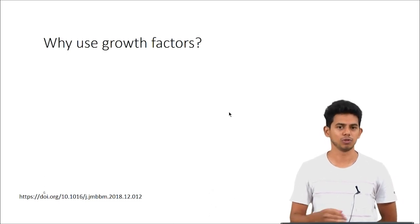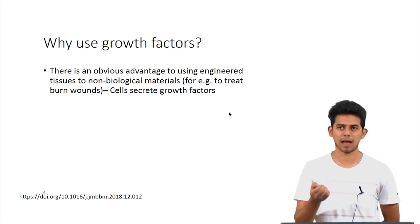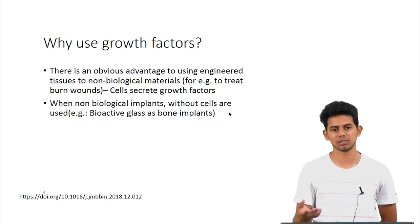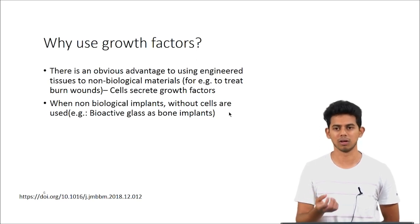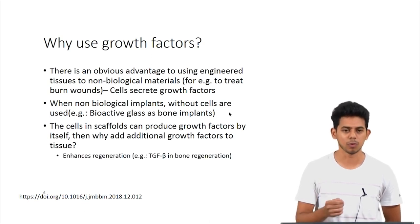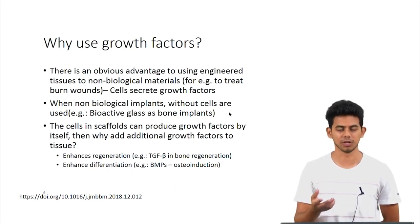Why do we use growth factors? In tissue engineering, there is an advantage to using biological materials like cells for treating a disease. Having a cell in the scaffold means the cells are able to produce growth factors, proliferate, and improve healing time. There are also constructs in which we do not use cells — even here growth factors are important because you want cells to migrate to the wound site and heal the area. If we are using cells, it is also useful to add growth factors to enhance regeneration and differentiation. Examples are TGF-β in bone regeneration and BMPs in osteoinduction.